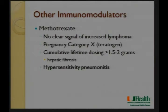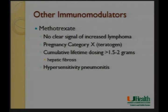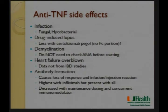Methotrexate has no clear signal for increased lymphoma — not surprising since high-dose methotrexate is actually used to treat some lymphomas like primary CNS lymphoma. It must be absolutely avoided in those trying to conceive, as discussed in the previous talk. There is a cumulative lifetime hepatotoxicity threshold at approximately 1.5 to 3-4 grams, after which hepatic fibrosis can develop, requiring close monitoring of liver chemistries. A hypersensitivity pneumonitis can also develop. The subcutaneous and intramuscular forms are more efficacious than oral in IBD.